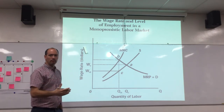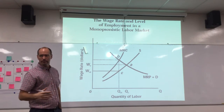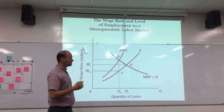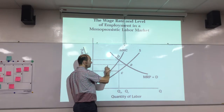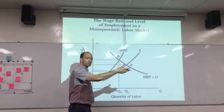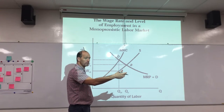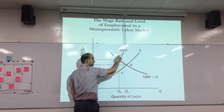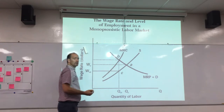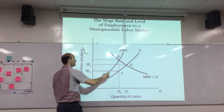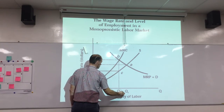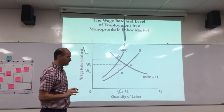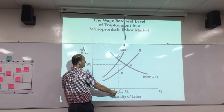As a consequence, the monopsonist will hire labor as long as the benefit — the marginal revenue product (MRP) — is greater than the cost, the marginal resource cost (MRC). So they hire labor at the intersection of MRC and MRP, giving us the monopsonist quantity of labor.